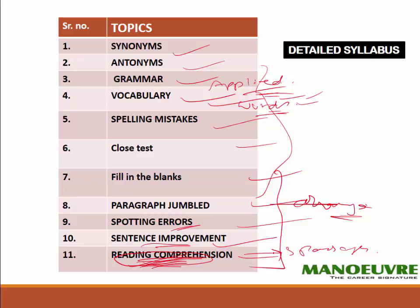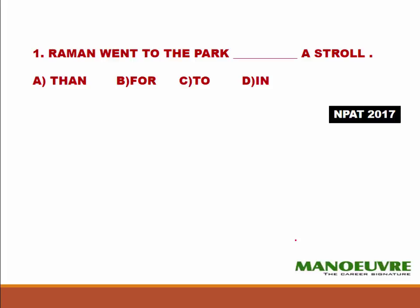This was our detailed syllabus. Now let us see how we go about solving NPAT questions. A few from last year's NPAT paper are here. The first one: 'Raman went to the park ___ a stroll.' You are required to fill in the correct grammatical word. The options are: (a) than, (b) for, (c) to, and (d) in.